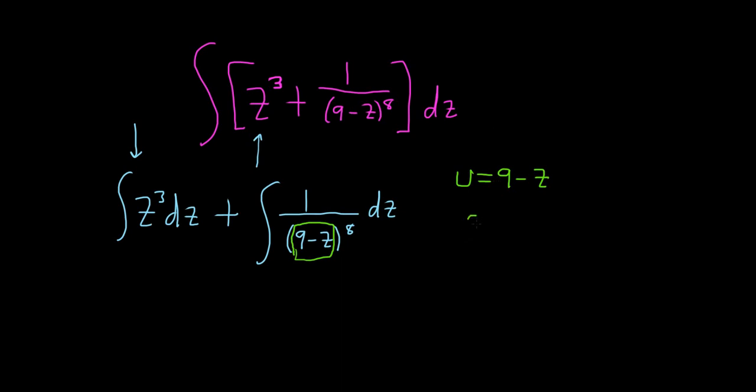Now we compute the derivative. So the derivative of u is du. The derivative of 9 is 0. And then here the derivative of z is negative 1. So we just get negative 1 dz, which is the same as negative dz.